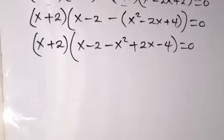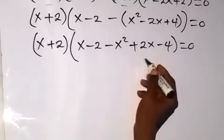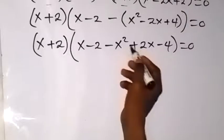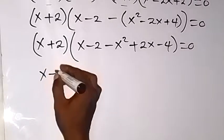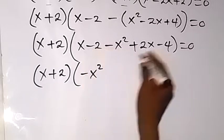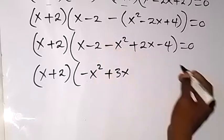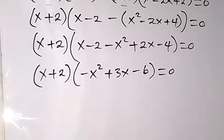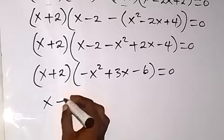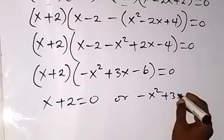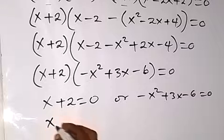Let's continue solving this. Inside this bracket now we can bring the like terms together. We only have one x squared. So we write x plus 2, and therefore we have minus x squared, then the x terms: x plus 2x making plus 3x, then minus 2 minus 4 that's minus 6, which is equal to 0.